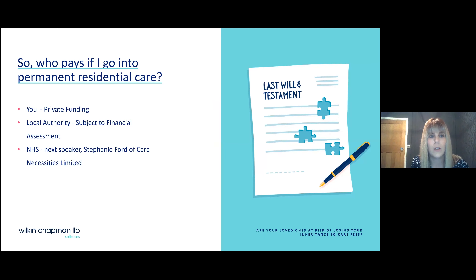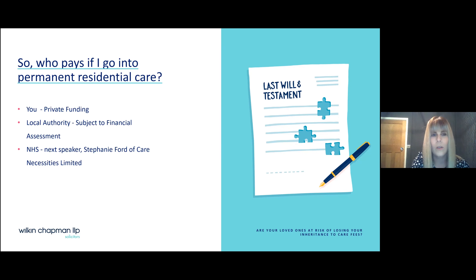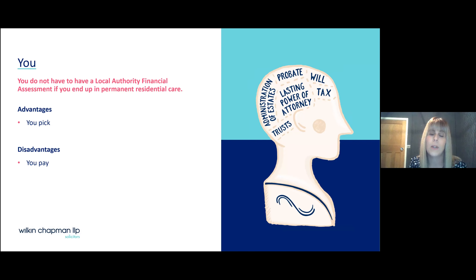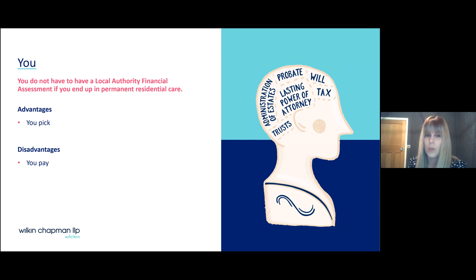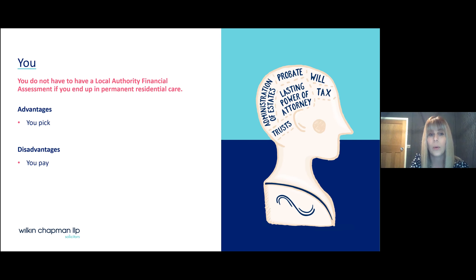Who pays if you go into permanent residential care? There are three main possibilities: you, privately funded; the local authority, subject to financial assessment; or the NHS. If you go privately, you can choose your care home, pick the room, and privately contract with that home. The main advantage is choice and control, and you wouldn't need to disclose details of your assets or income to anyone. The biggest disadvantage is cost — you might even pay more than the locally-contracted rates the local authority can secure.